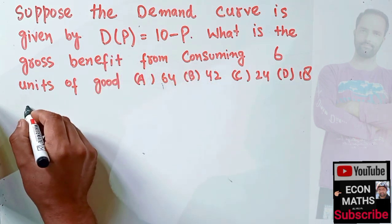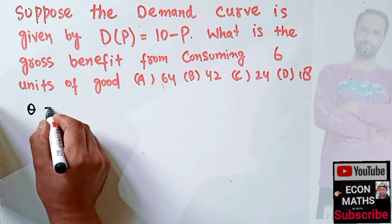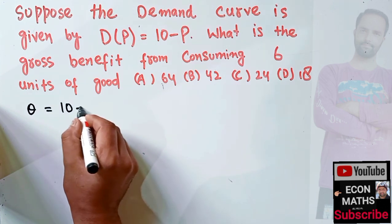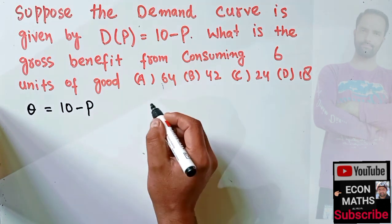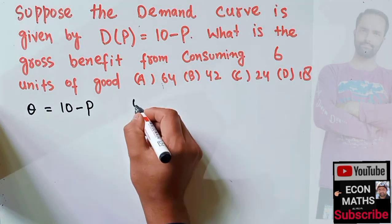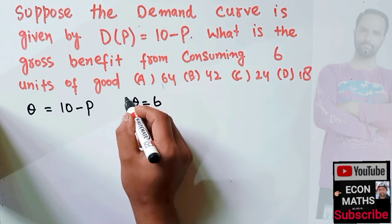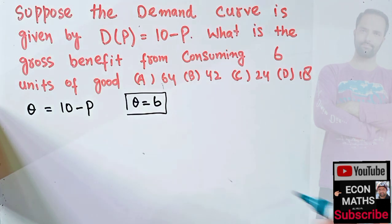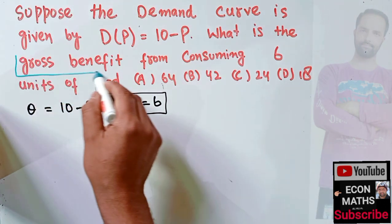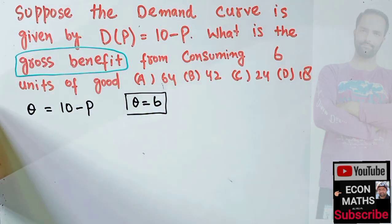We are given the demand function — let's say D(P) = Q, meaning quantity demanded is a function of price: Q = 10 minus P. We are also told that Q is equal to 6, so six units are being consumed by the consumer. We need to find out the gross benefit, which is essentially the consumer surplus — the gross benefit that the consumer gets.